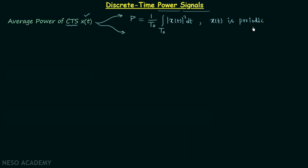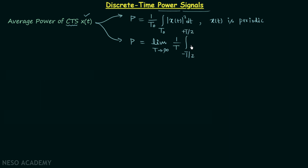When x(t) is non-periodic, we use another formula: the average power P is equal to the limit as T tends to infinity of 1 over T times the integration from −T/2 to +T/2 of |x(t)|² dt. We will use this formula when the continuous time signal x(t) is non-periodic.